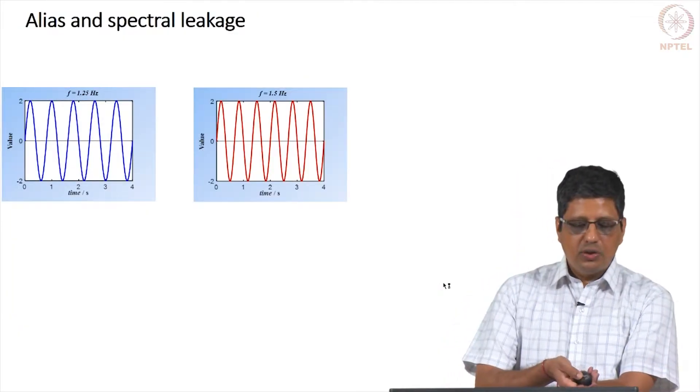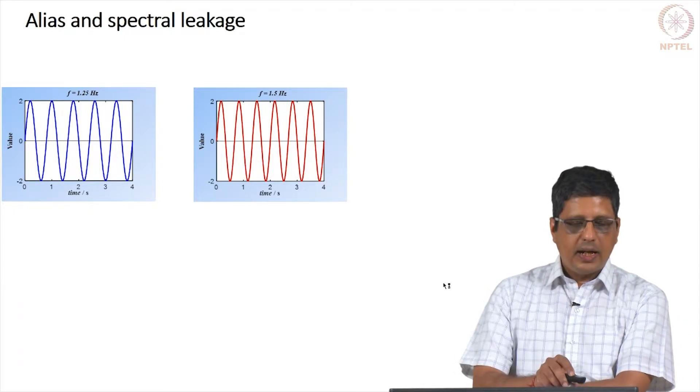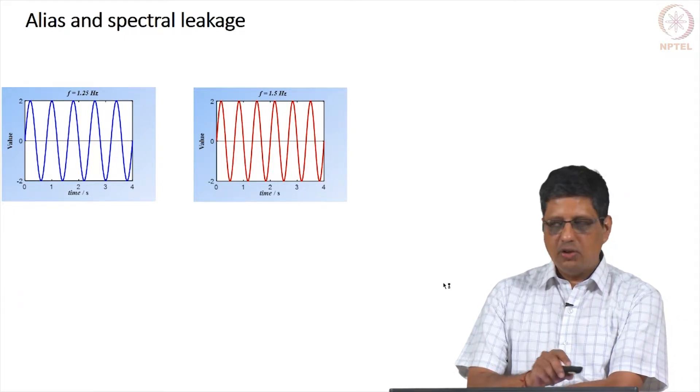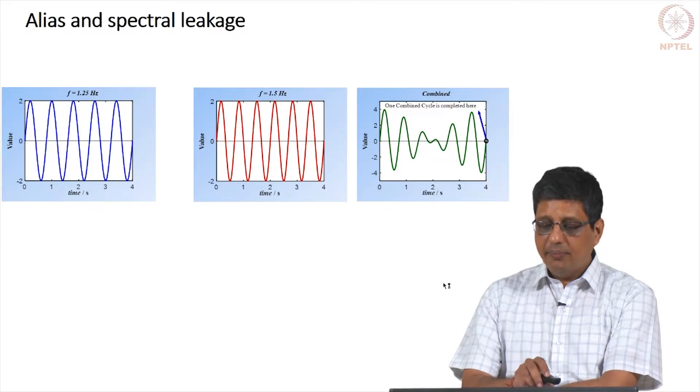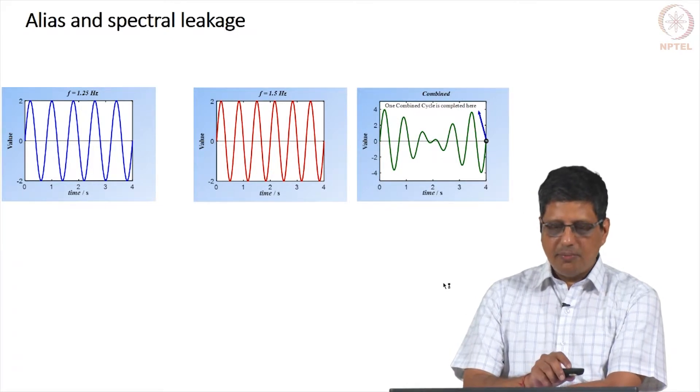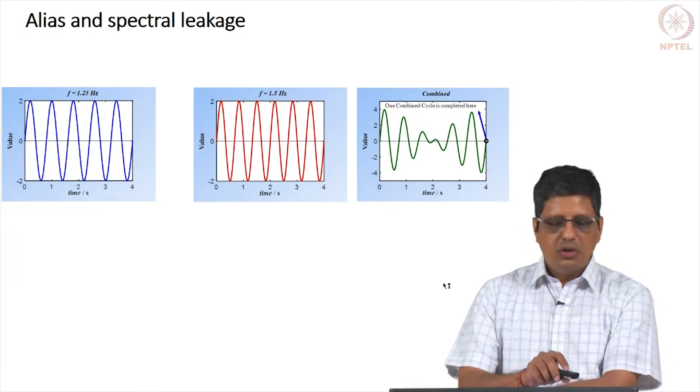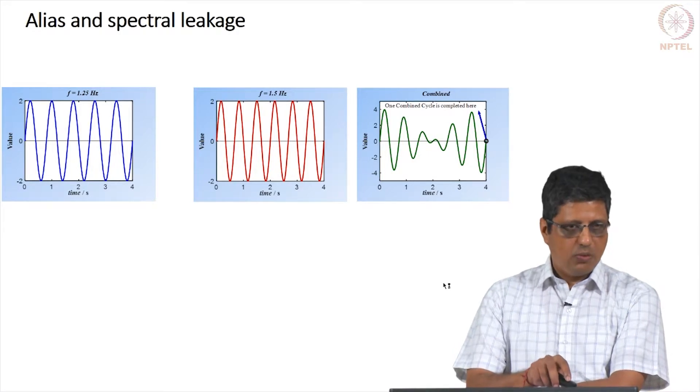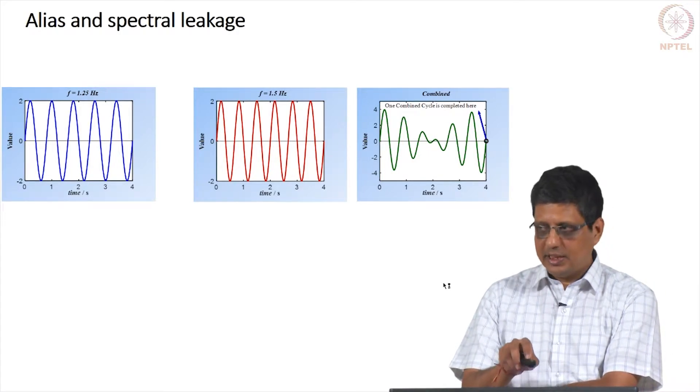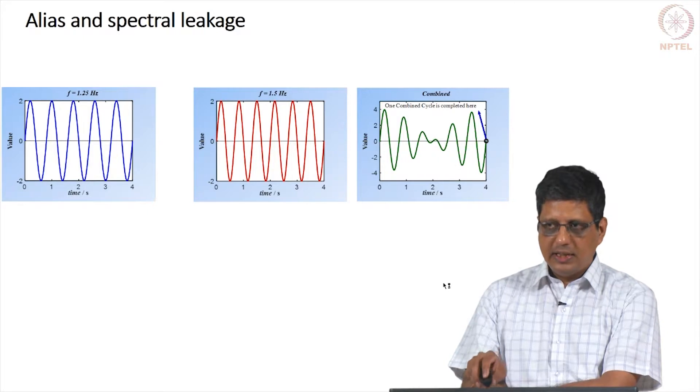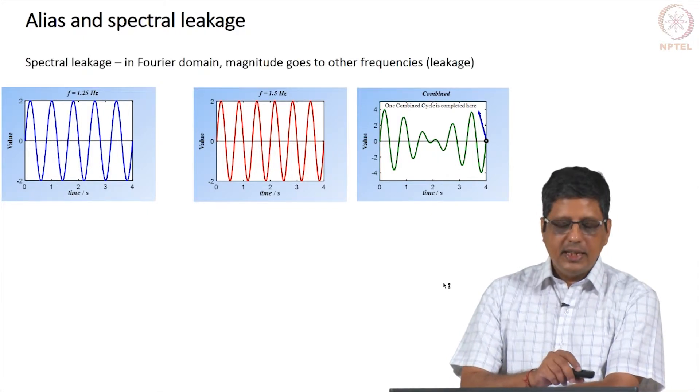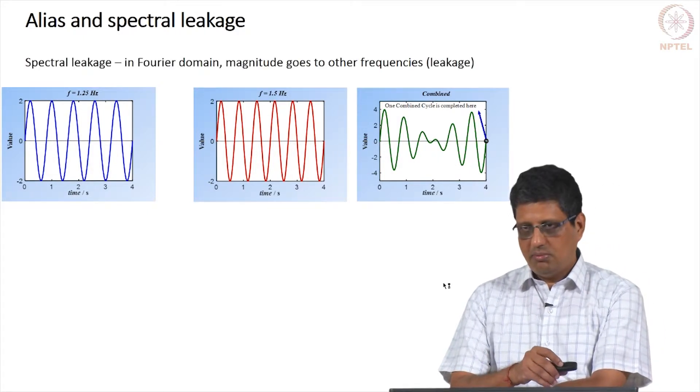So here I want to show two waves, amplitude is 2 and the frequencies are 1.25 and 1.5. And if you combine them, you can get a complete wave with a period of 4 seconds. So the first wave has a period of less than 1 second, second wave has a period of less than 1 second, combined wave has a period of 4 seconds. Let us say that I do not want to wait for 4 seconds.